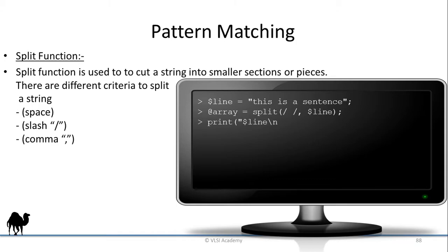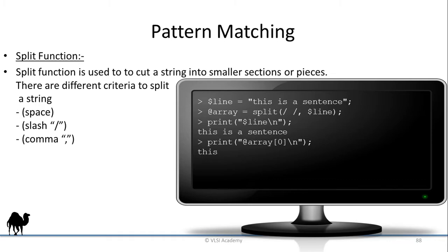When you print the variable 'line', the output will be the original string value. Since we define one variable called 'array' which has got all string values split based on spaces, when we print the first element of the array it will be 'this'. When we try printing the second element, it will be 'is'.